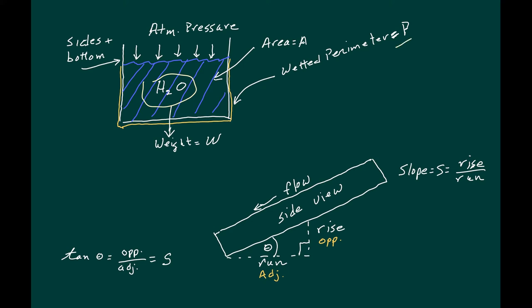P is the wetted perimeter. It's just the portion in contact with the fluid. It's open to the atmosphere, so the atmospheric pressure is pressing down on it in all places. And the weight is the mass times the acceleration of gravity.